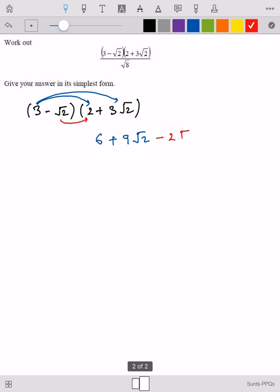Minus square root 2 times 2 is minus 2 root 2, and minus square root 2 times 3 square root 2. Remember that square root 2 times square root 2 is square root 4 which is 2. So it is minus 6.